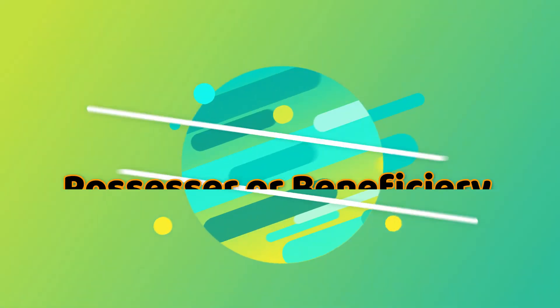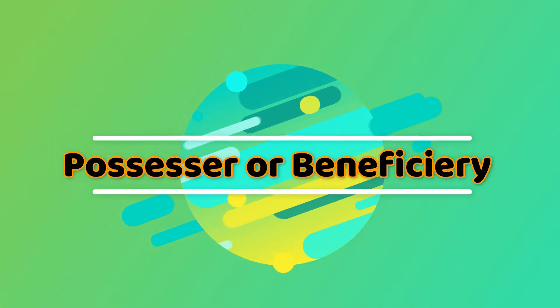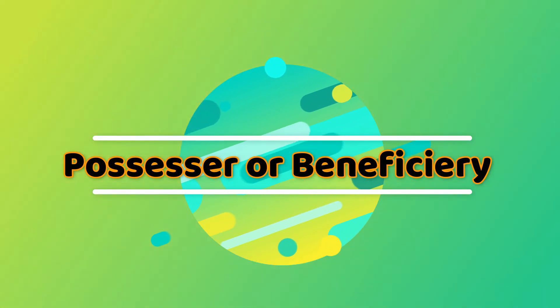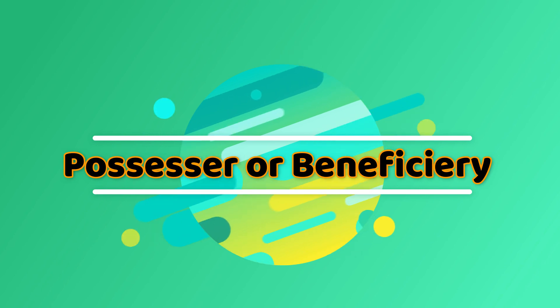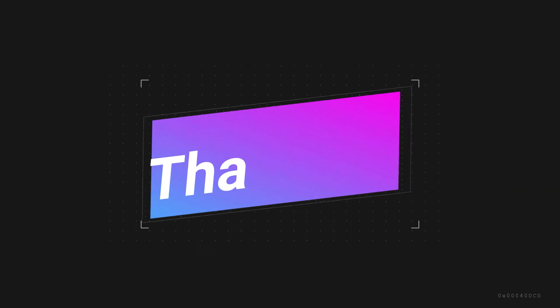We also have the possessor or beneficiary, describing the entity benefiting from an action. The beneficiary is always animate. These are the different semantic roles performed by different lexical items. Thank you so much.